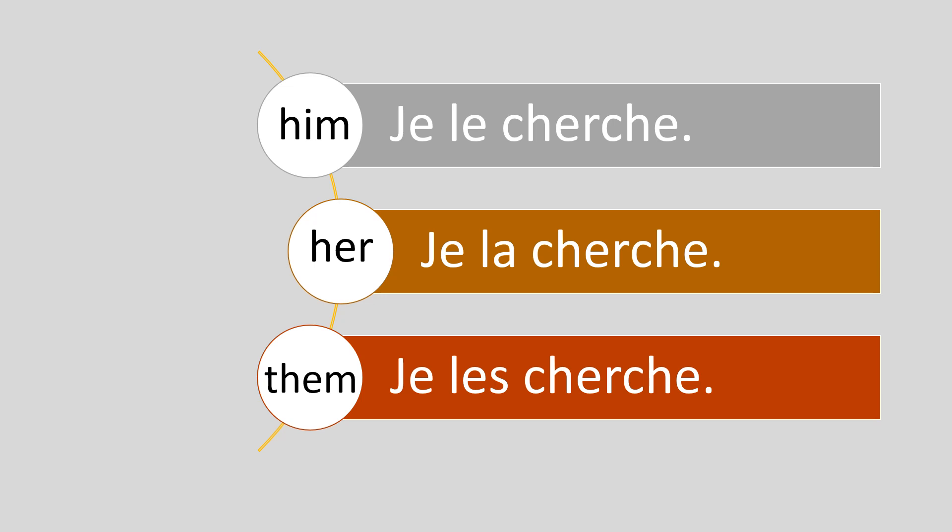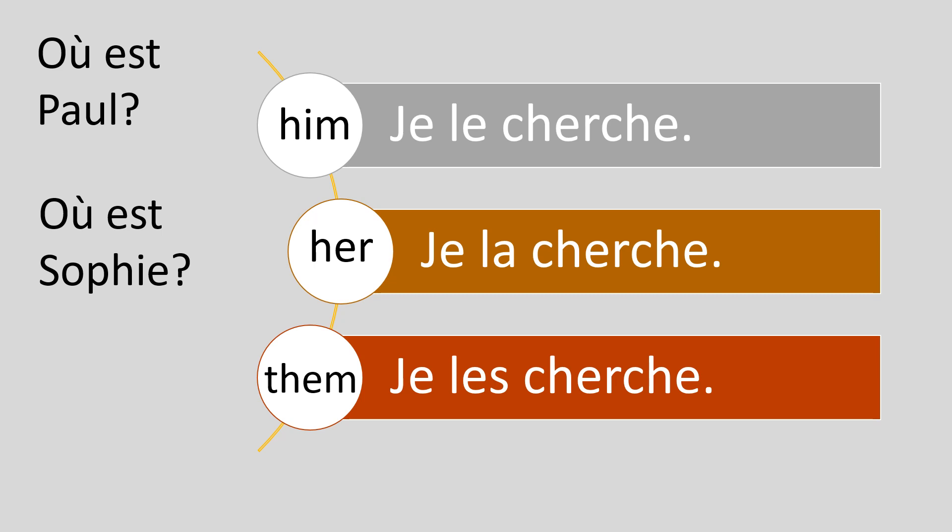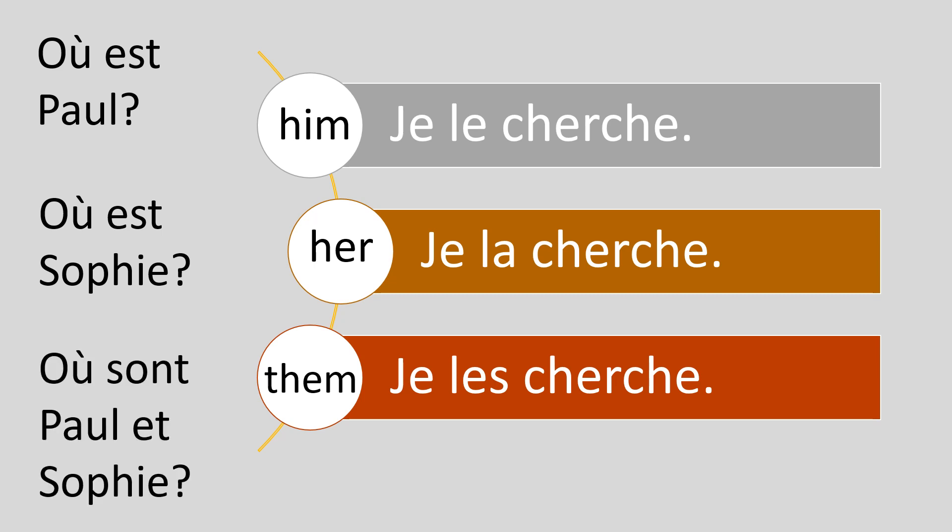Here are some examples. Où est Paul? Je le cherche — I'm looking for him. You can see straight away that le is placed before the verb, whereas in English it is after the verb. Où est Sophie? Je la cherche — I'm looking for her. And où sont Paul et Sophie? Je les cherche — I'm looking for them.